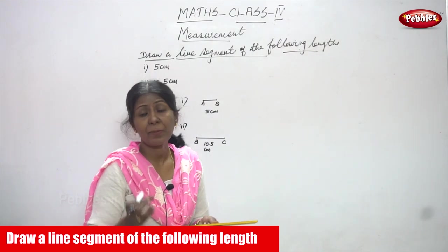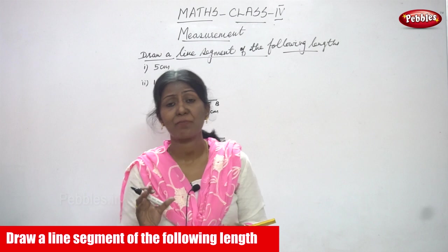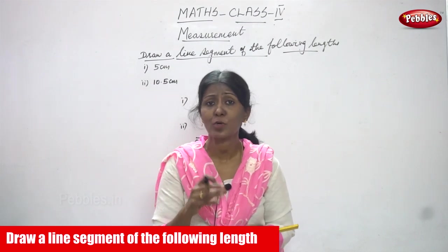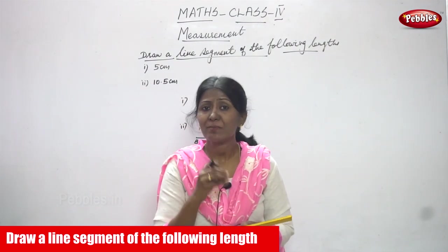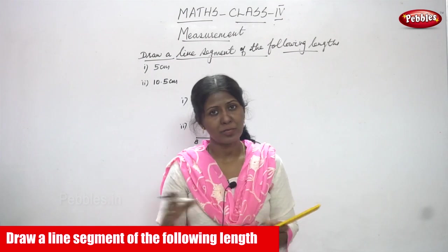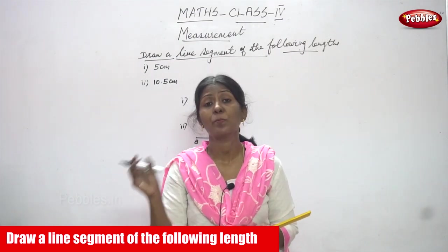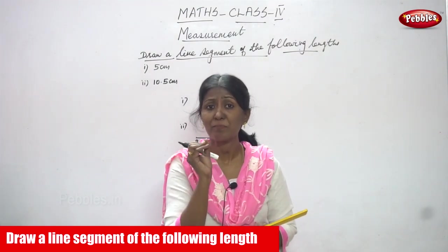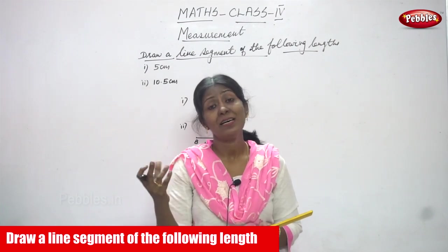Line segment is nothing but a specific measurement. A specific measurement is called as a line segment. If you line means, it is not a measurable thing. It keeps on going. If you have a specific measurement, this is called as a line segment.